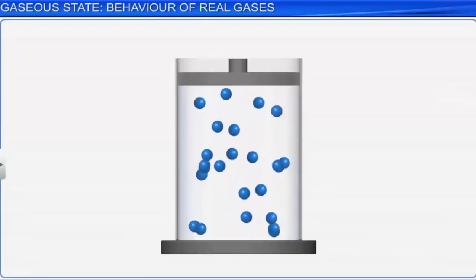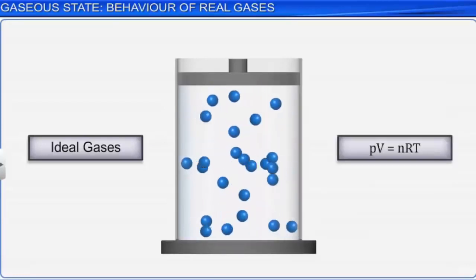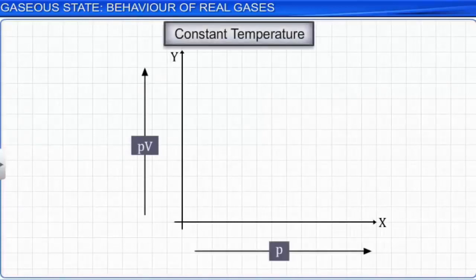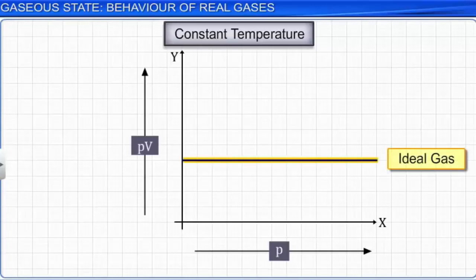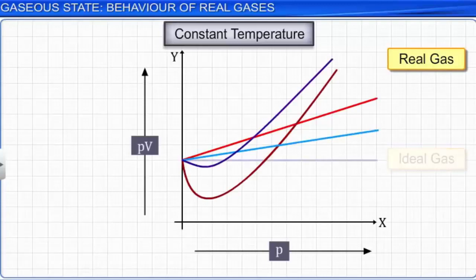Gases that obey the ideal gas equation are called ideal gases. The ideal gas equation is PV equals nRT. If we plot a graph of PV versus pressure at constant temperature, then according to Boyle's law we should get a straight line parallel to the X-axis, as PV is constant at constant temperature for a fixed amount of gas. However, for a real gas, the plotted line is not a straight line parallel to the X-axis. This shows that real gases — including almost all gases such as nitrogen, oxygen, hydrogen, and carbon dioxide — show significant deviation from ideal gas behavior.